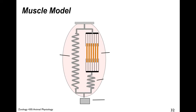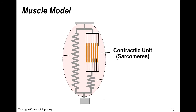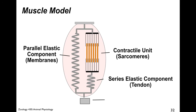Here's a simple muscle model. We have the contractile unit — the muscle fibers, which are just a bunch of sarcomeres. It's attached via series elastic components, which are usually tendons: collagen fibers that are pretty stiff but act as springs that store energy. Then there are parallel elastic components, like the membranes of the muscles. And then there's the load — the thing we're trying to lift or pull.